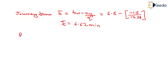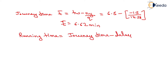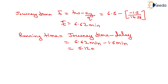Now we have to determine the running time. Running time equals journey time minus delay. Journey time is 6.62 minutes and delay for north-south direction is 1 minute 30 seconds, so we subtract 1.5 minutes. On solving this, we will have running time equals to 5.12 minutes.